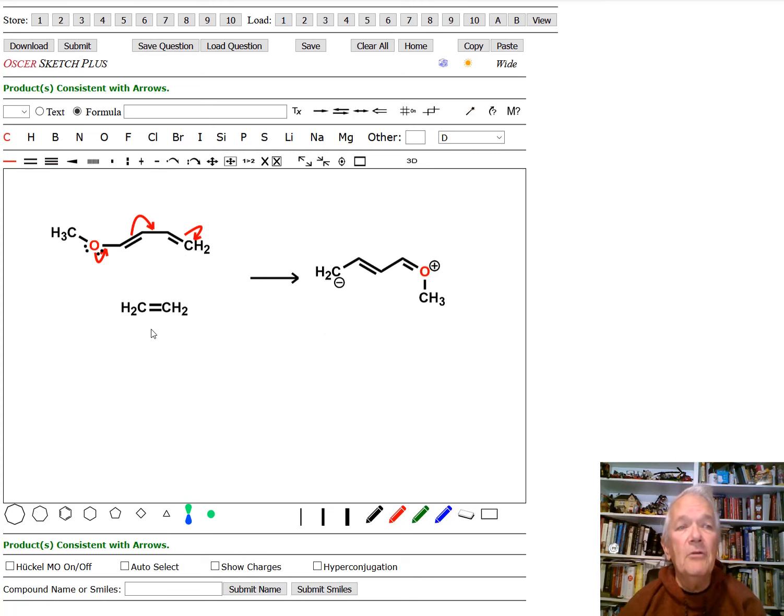Now, how can we make the ethylene better? Well, the way to make the ethylene better is to put an electron withdrawing group on it. And what's a good electron withdrawing group? Let's put on a carbonyl. And so this is the simplest example of a carbonyl. This will now be electron accepting.